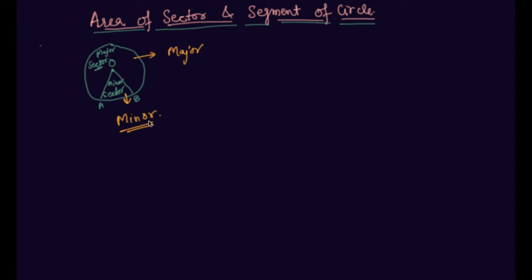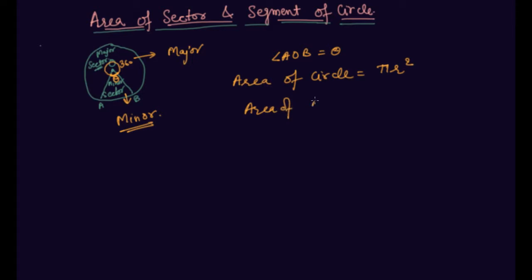How to find the area of a sector? If I have to find the area of a minor sector, let this minor sector sweep angle theta at the center of the circle — meaning angle AOB is theta — and the total angle of the circle will be 360. So this minor sector is only covering angle theta. Area of circle, as you all know, is πr². So area of minor sector will be theta divided by 360, into the total area of circle. This is the area of minor sector.